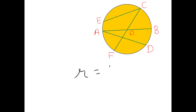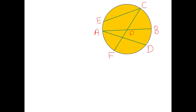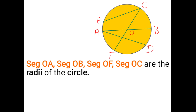Radius is equal to half of diameter. You have to take down this formula. R stands for radius, D stands for diameter. Radius is half of diameter. Diameter is the middle line drawn fully through the center of a circle. Now write down the answers: segment OA, segment OB, segment OF, and segment OC are the radii of the circle.